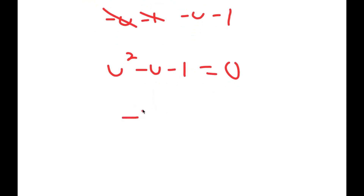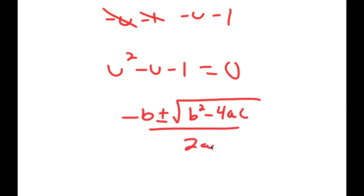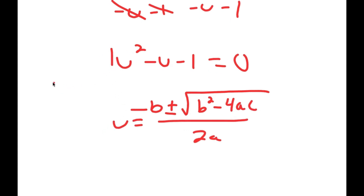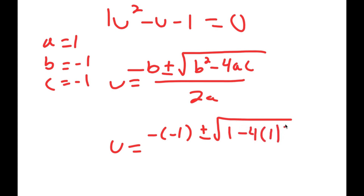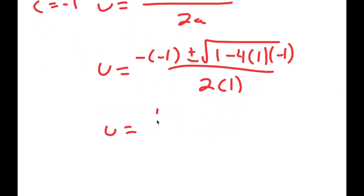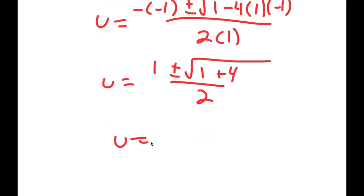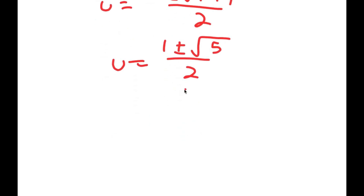To solve this equation I'm going to use the quadratic formula, which is negative b plus or minus the square root of b squared minus 4ac all over 2a. In this case a is 1, b is negative 1, and c is negative 1. So I get u equals negative of negative 1 plus or minus the square root of negative 1 squared — which is positive 1 — minus 4 times 1 times negative 1, all over 2 times 1. This gives 1 plus or minus the square root of 1 plus 4 over 2, which equals 1 plus or minus the square root of 5 over 2.